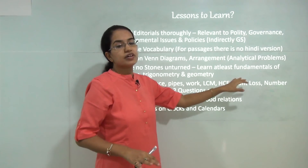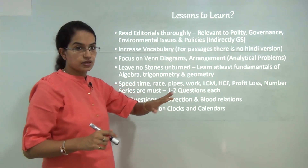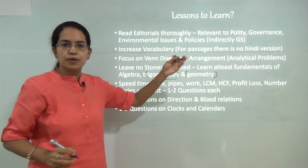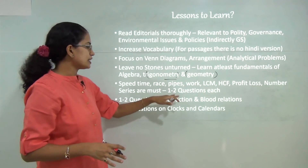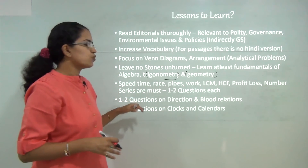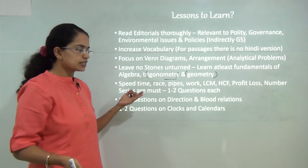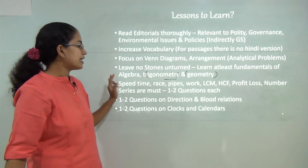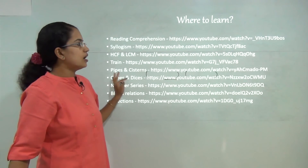Leave no stones unturned — even though fewer questions are asked on algebra, trigonometry, and geometry, do not leave those areas untouched, as there is a probability of such questions appearing, similar to how permutation and combination appeared last year. Fixed topics that appear every year include: one or two questions definitely on speed-time problems, races, pipes, work, HCF, LCM, profit and loss, number series, directions, blood relations, and clocks and calendars.